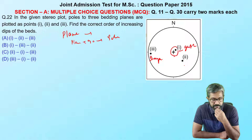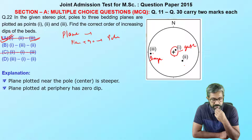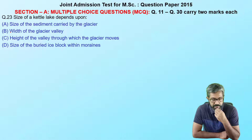So point I is the gentler dip bed, while point III is the steeper dip bed. The increasing order of dipping gives us option A. Remember: any plane plotting near the center of the stereonet is steeper; the reverse is true for poles near the outer circle. Moving to the next question on geomorphology.